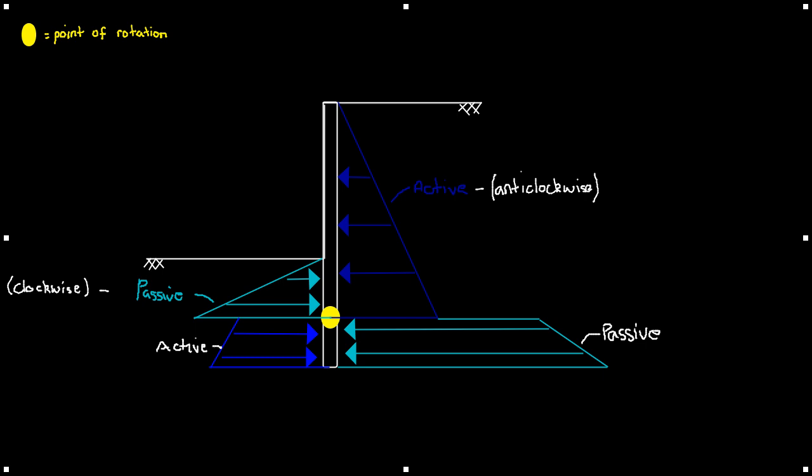Now looking at this we have two unknowns. We have the depth of embedment D and the depth of the point of rotation.